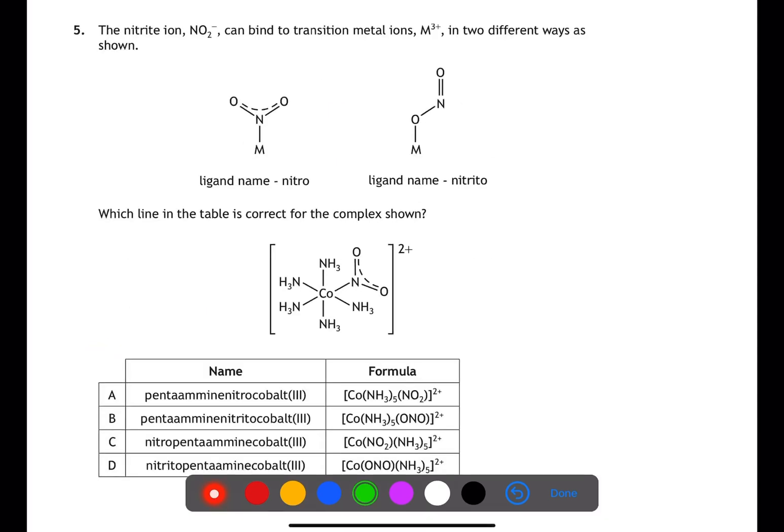In question five, we're looking at transition metal chemistry. Here, we have the nitrite ion which can bind in two different ways to a metal. If it binds through the nitrogen atom, then it's the nitro ligand. If it binds through the oxygen atom, it's the nitrito ligand.